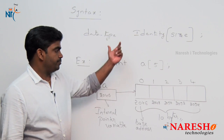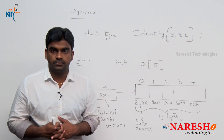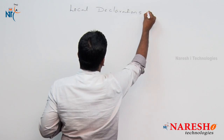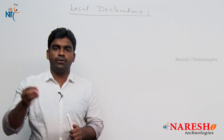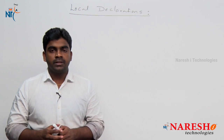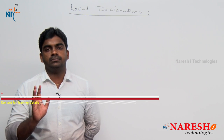Next are local declarations and global declarations of arrays. Just like a general primitive variable can be declared either globally or locally — locally means inside a block or method, globally means outside all methods — array variables can also be declared in the same way. For local declarations, inside the method, at the time of declaration, if you want to assign some values into the array, you can directly assign using the assignment operator — arrays can be initialized directly.